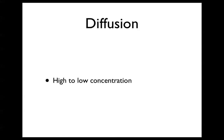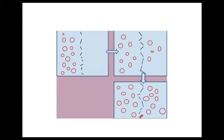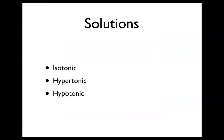Diffusion is the movement from high concentration to low concentration. This is a picture of diffusion. As you can see, the movement is from high concentration to low concentration, so eventually both sides become equal.